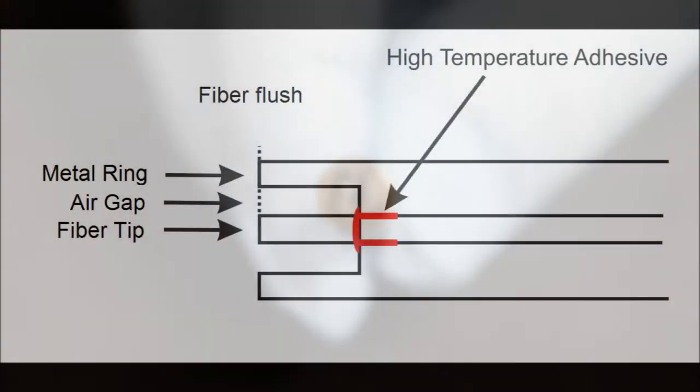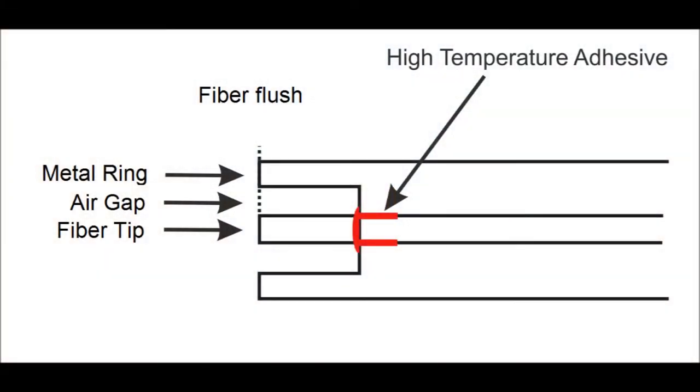In an air gap style connector the fiber overhangs a few millimeters in the gap section of the connector ferrule. The back of the ferrule supports the fiber. The fiber tip can be flush with the ferrule end face or slightly recessed.